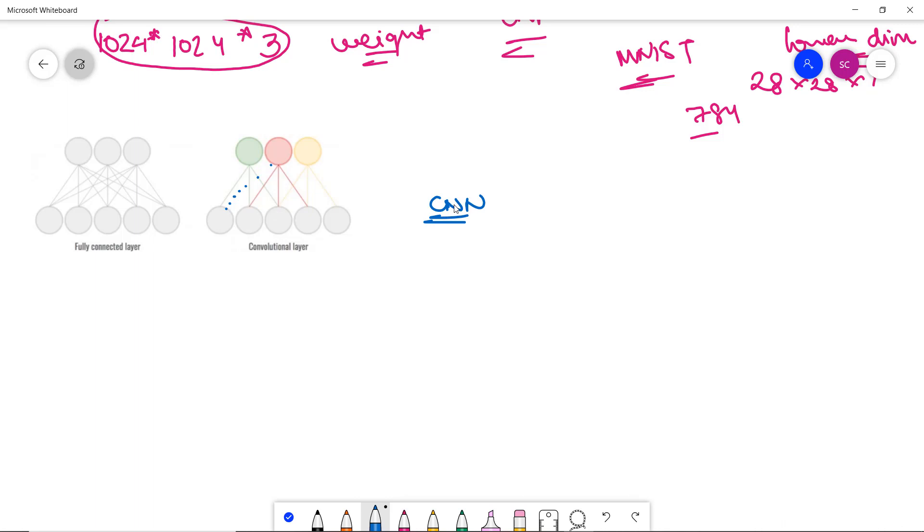In the fully connected layer, all neurons of the first layer are connected to neurons in the next layer. But now we will be operating on the convolutional layer in CNN, and we will see the working of it in our next video.